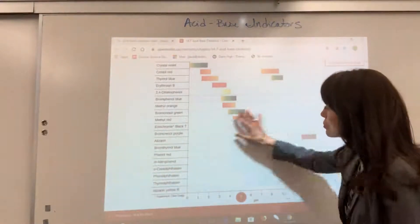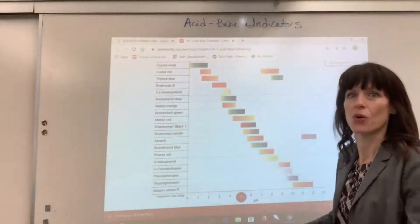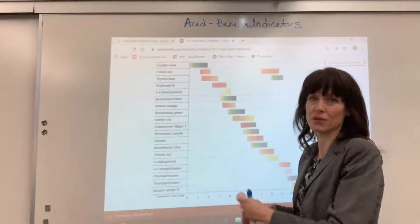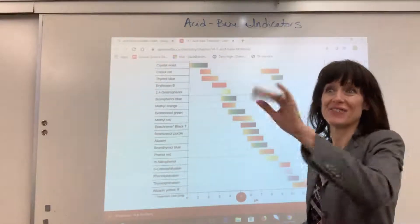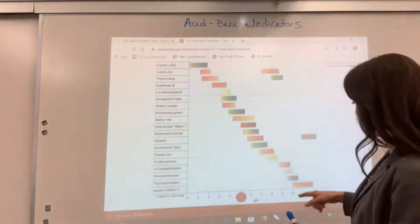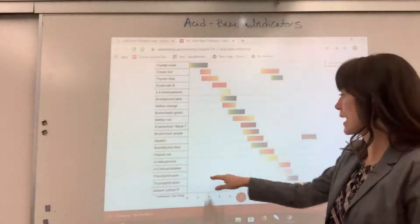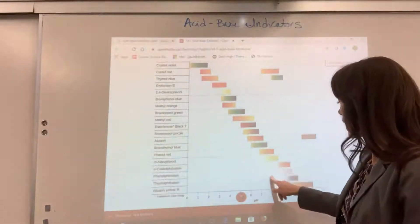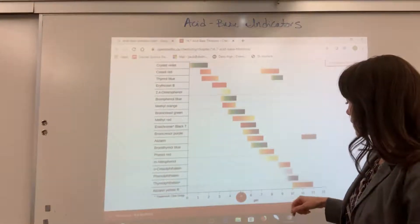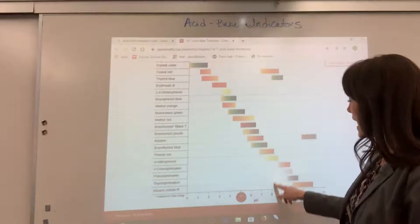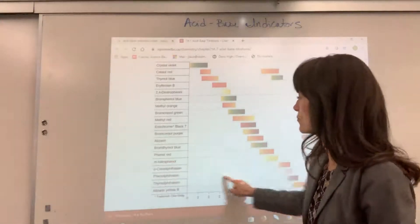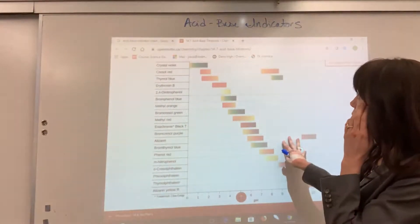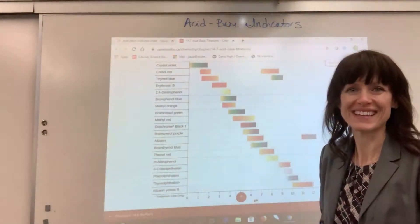You choose an indicator where you think that pH will be for the equivalence point. So for example, I might be thinking, okay, I've got a weak acid that I'm going to titrate with a strong base. I think that pH is going to change right around maybe an 8, and so I would choose phenolphthalein to be my indicator. Okay, so that is how you choose an acid-base indicator. Thank you.